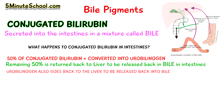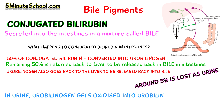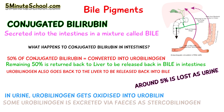The urobilinogen also enters back into the liver via the enterohepatic circulation and is re-excreted into bile, but around 5% is lost through urine. The urobilinogen gets oxidized into urobilin when the urine is exposed to air. Some of the urobilinogen is also excreted via the feces as stercobilinogen.